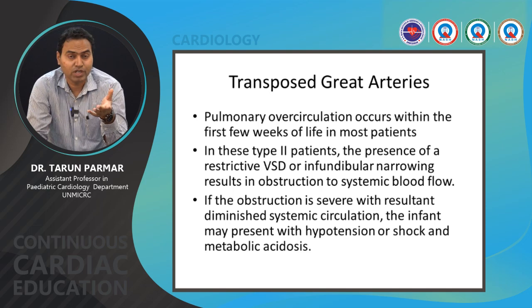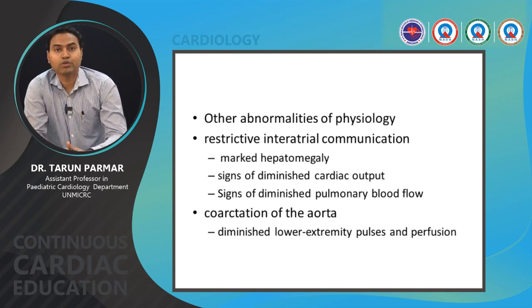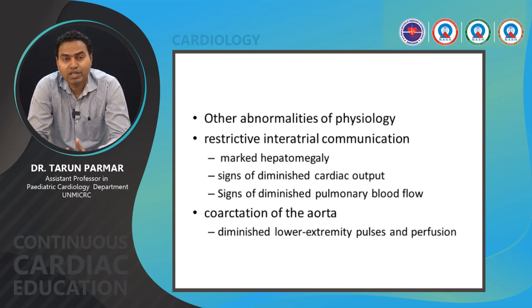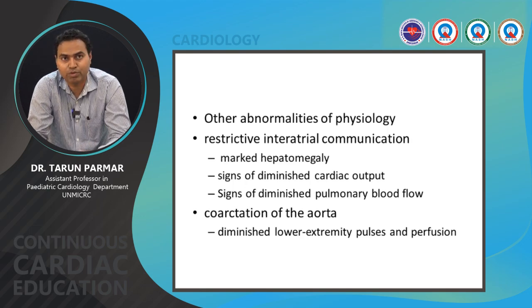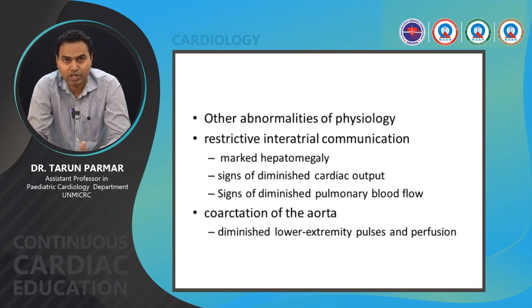Other physiological abnormalities include a restrictive interatrial communication. Since the obligatory right-to-left shunt routes all systemic venous blood from the right atrium through the ASD, restriction leads to right-sided failure with hepatosplenomegaly, diminished cardiac output, or diminished pulmonary blood flow. Associated coarctation of the aorta may also be present, manifesting as decreased lower extremity pulses or perfusion.